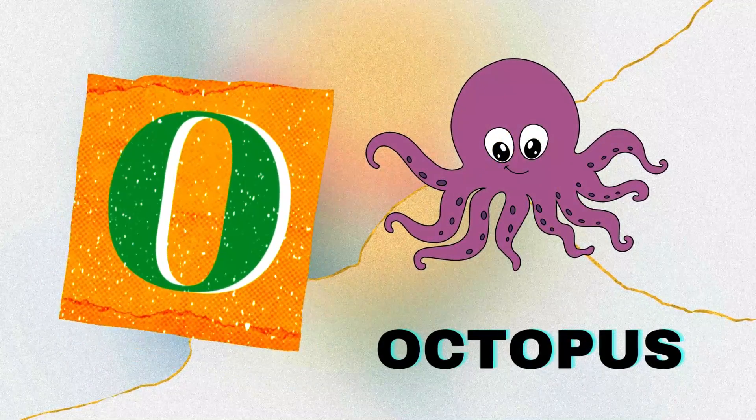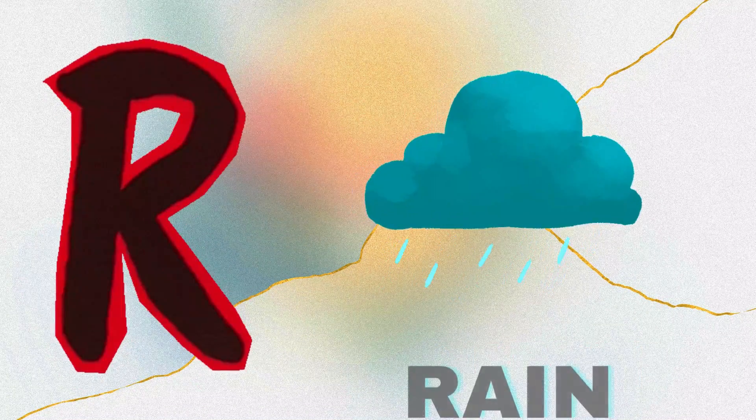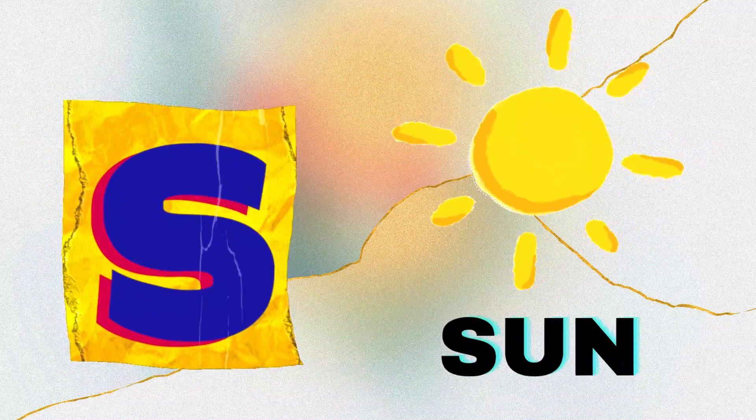O is for octopus. P is for p-p-pirate. Q is for qu-qu-queen, R is for rain. S is for sun.